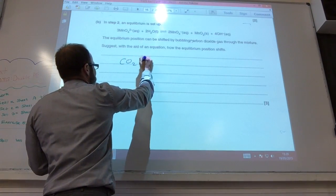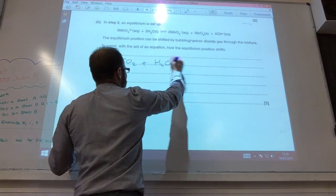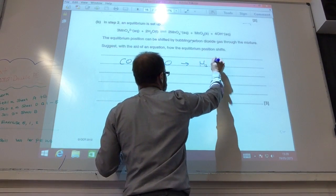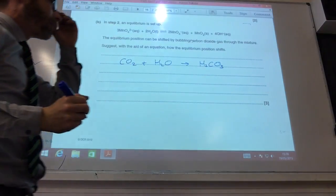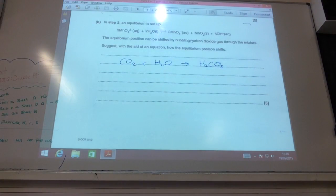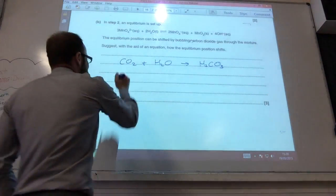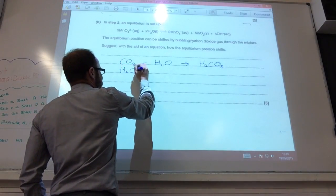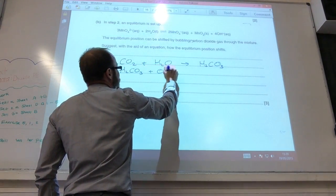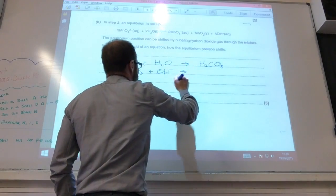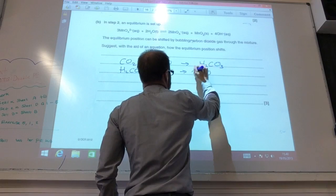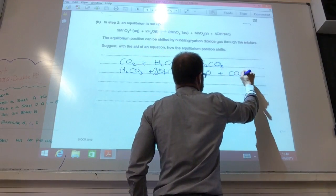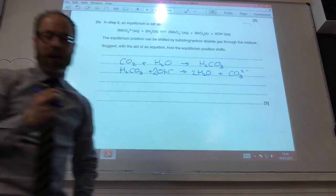So let's have a think. If they've got carbon dioxide, that's going to react with water to form H2CO3, carbonic acid. Obviously if you've got an acid there, that's going to react with hydroxide ions, isn't it?